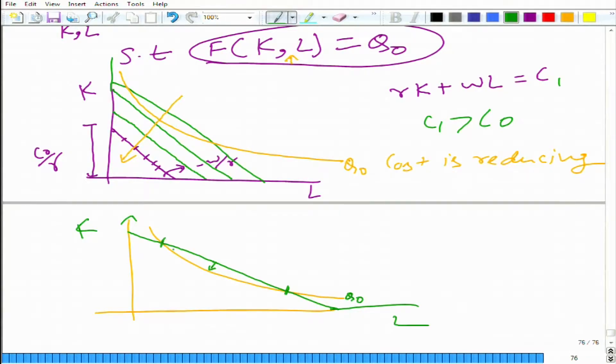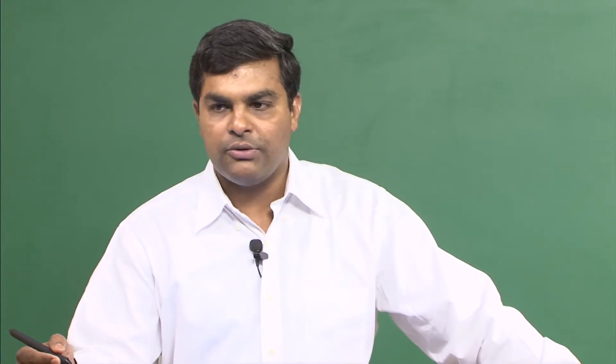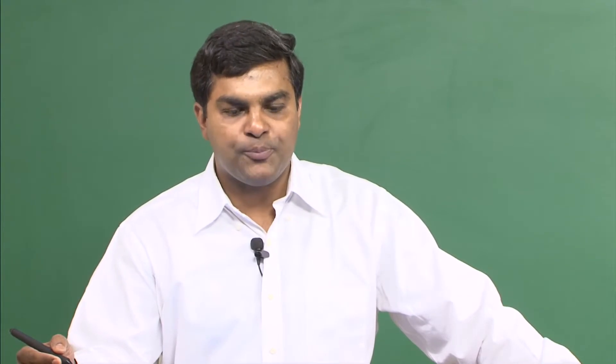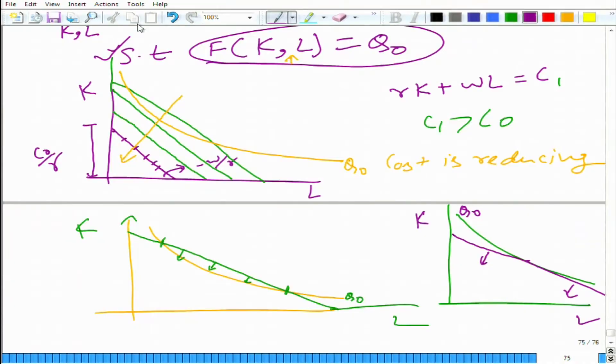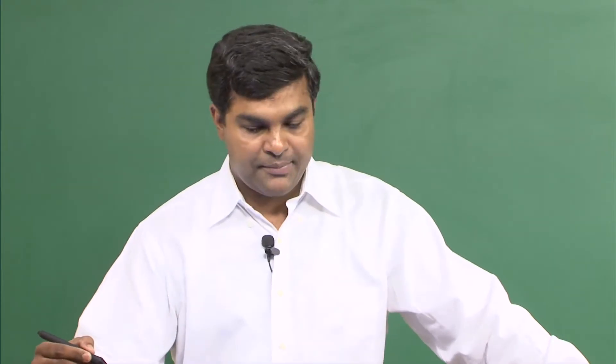So what we will do? We will keep on moving in this direction such that one of the isocost lines becomes tangent to this particular isoquant, and this is the isoquant here. Now it is no longer possible to reduce the cost. Why? If we move in this direction, what will happen? Cost will reduce, but we would not be able to produce q₀ amount of output. We would not be able to produce q₀ amount of output. So this condition that we have will be violated. We are solving some other problem, not the problem that we have discussed.